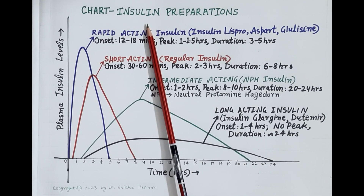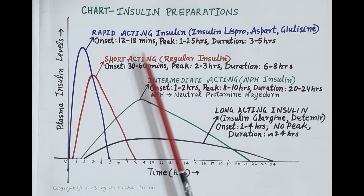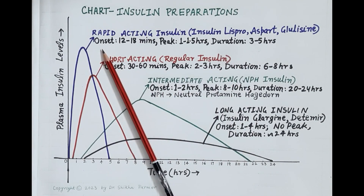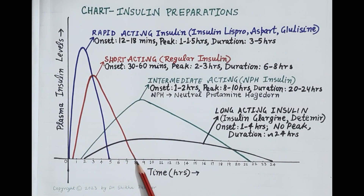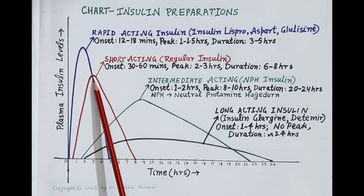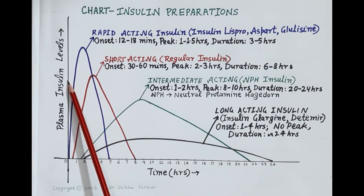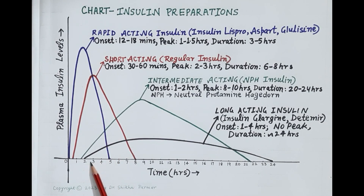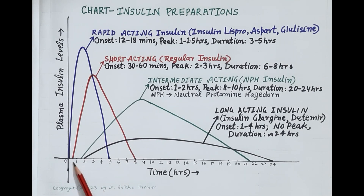Insulin preparations are mainly categorized based on differences in their onset, peak, and duration of action. Onset refers to how quickly the insulin preparation acts — for example, this preparation shown in red starts producing its effect 30 minutes after subcutaneous injection. Peak refers to the time taken to reach maximum plasma concentration, here attained within 2 to 3 hours. Duration is how long the preparation remains effective — in this case, 6 to 8 hours.